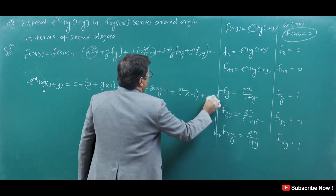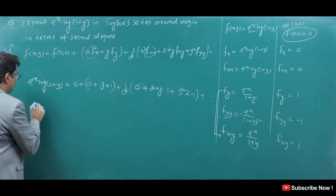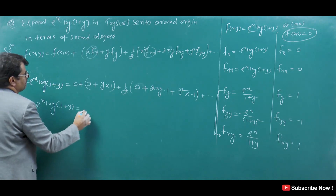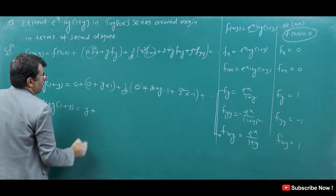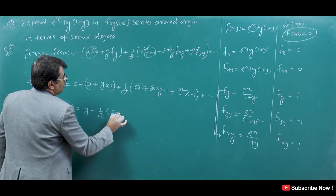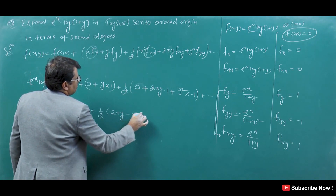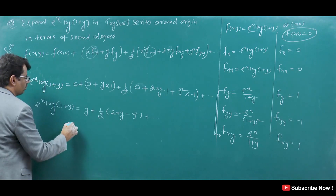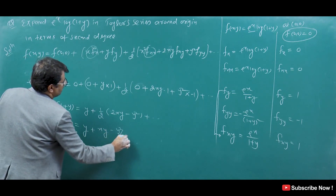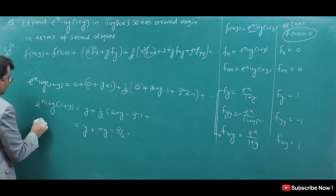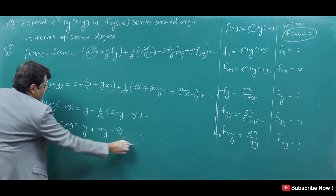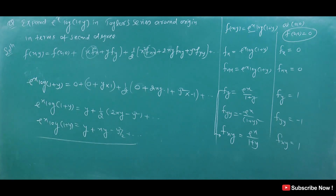So e^x log(1+y) — actually x log(1+y) — is equal to y plus 1 by 2 times (2xy minus y square), which simplifies to xy minus y square by 2. This is the expansion.